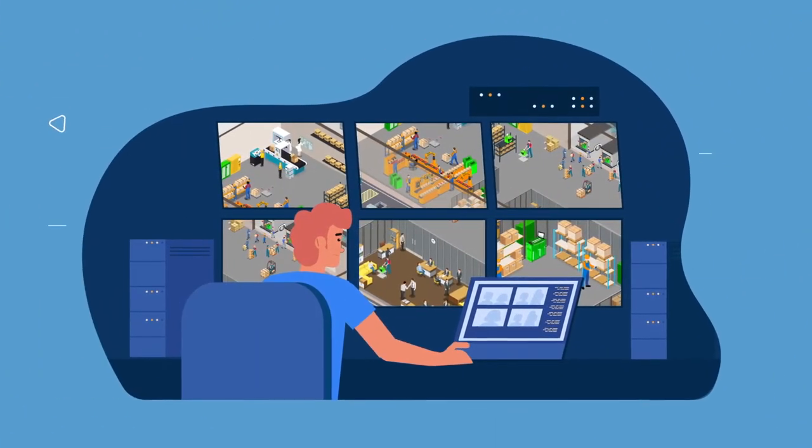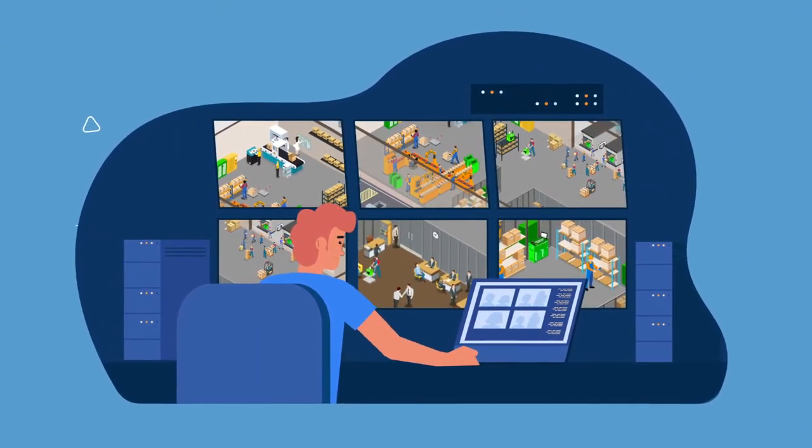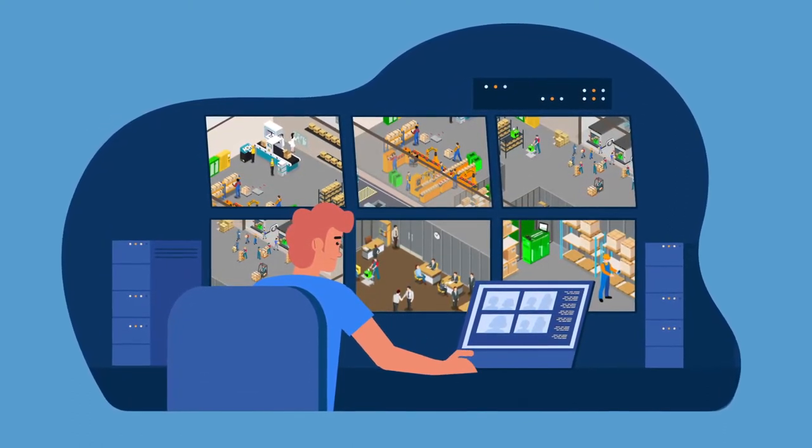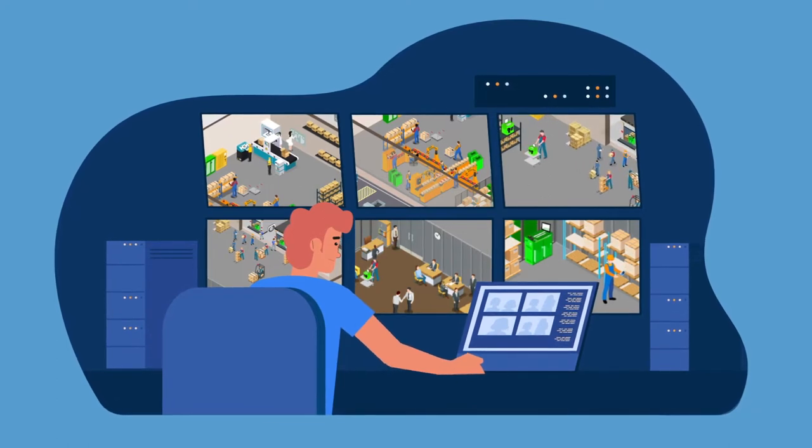With 4 to 32 motion-sensing cameras in each storeroom tracking employees' movements and hand motions, you'll have unprecedented accuracy when it comes to what's in your stock.